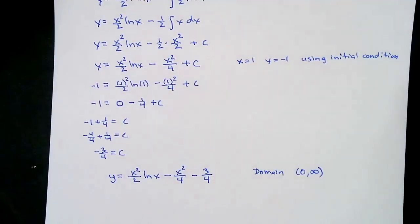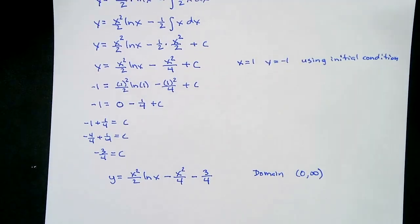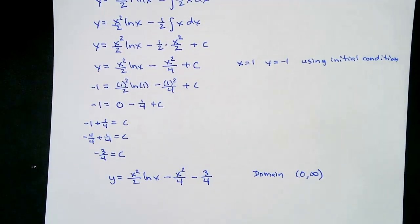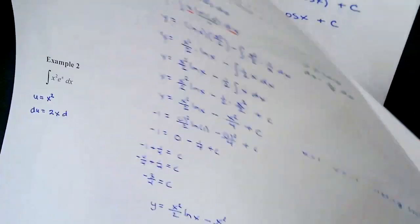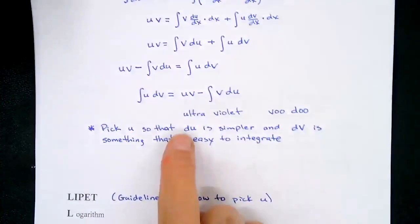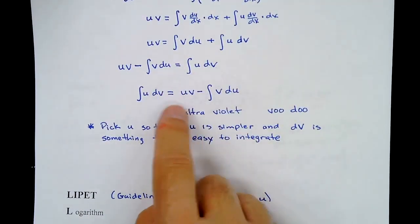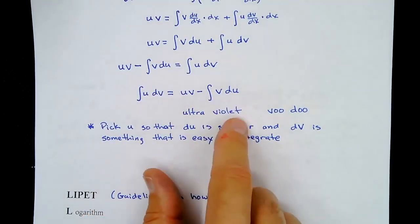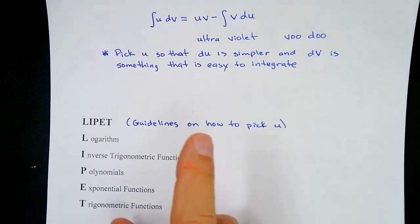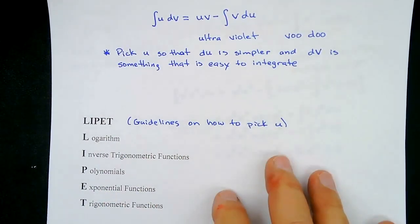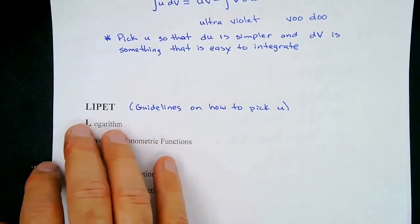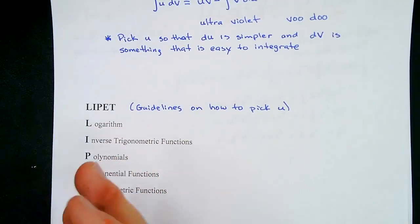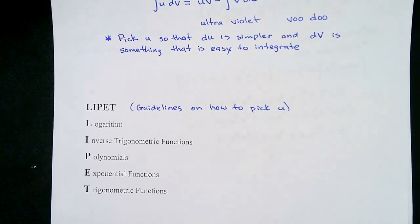That's integration by parts in a nutshell. Remember two key things: 'ultraviolet voodoo' to remember that the integral of u·dv equals uv minus the integral of v·du, and LIPIT — logarithms, inverse trig, polynomials, exponentials, trig functions — to decide what to pick for u. It's just the hierarchy of what you pick first.